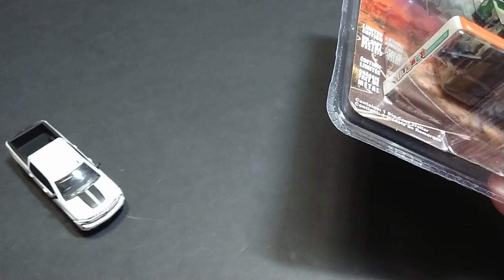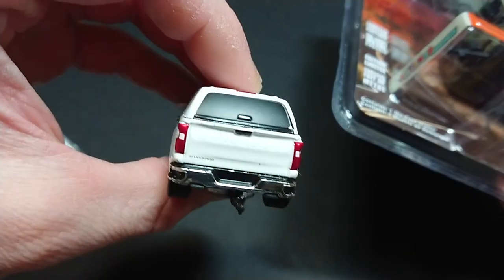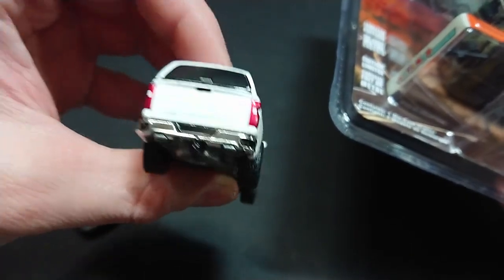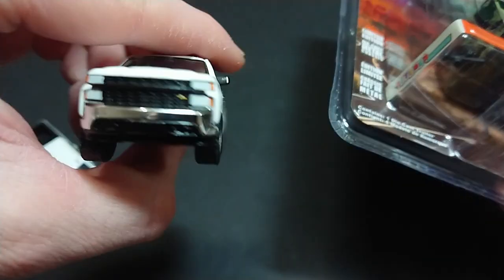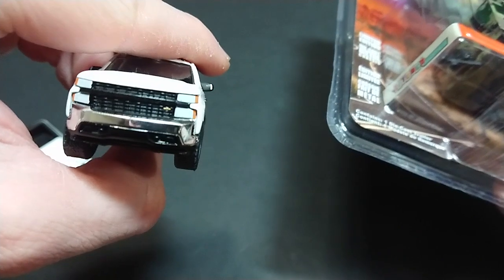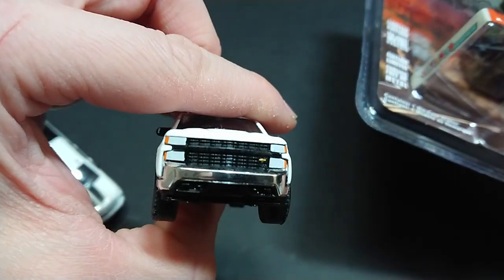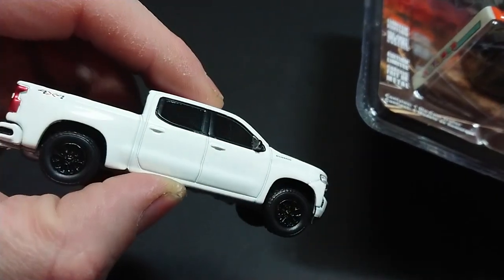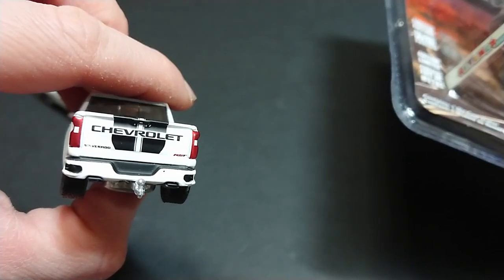This is in fact the LT work truck, you can see the LT just on the right side. Oh I apologize, it's the Z71, you see there right there, trim level is the Z71. Chevrolet is on the left side and then this one is the RST. You can see RST on the right side and Silverado Chevrolet strapped across the back.